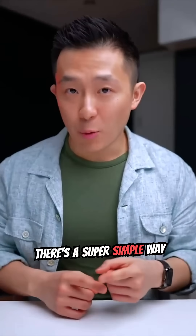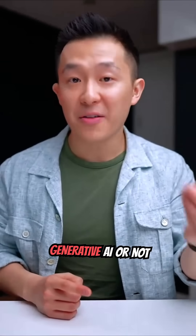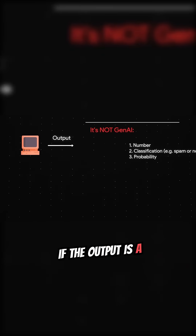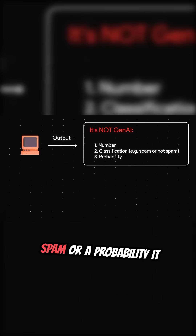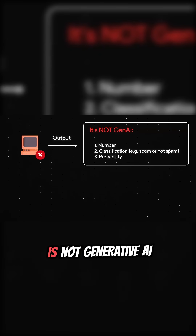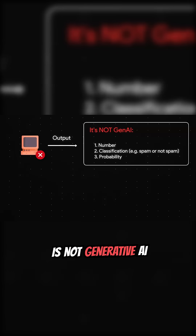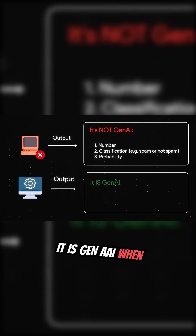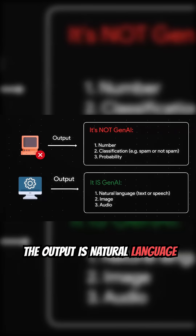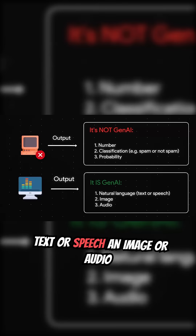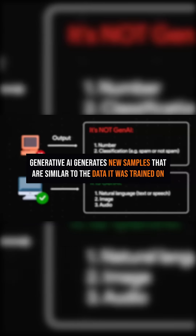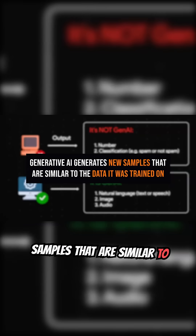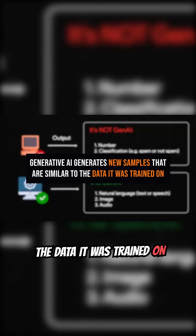There's a super simple way to determine if something is generative AI or not. If the output is a number, a classification, spam, not spam, or a probability, it is not generative AI. It is gen AI when the output is natural language, text or speech, an image or audio. Basically, generative AI generates new samples that are similar to the data it was trained on.